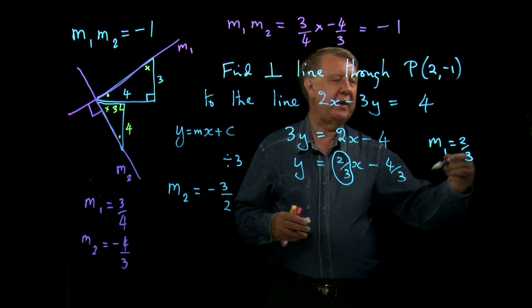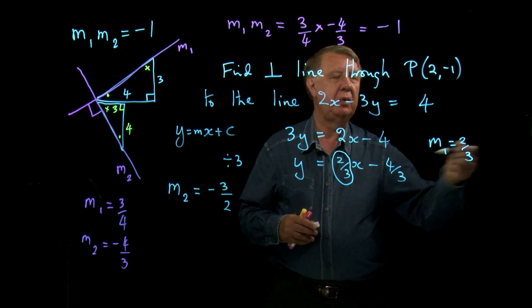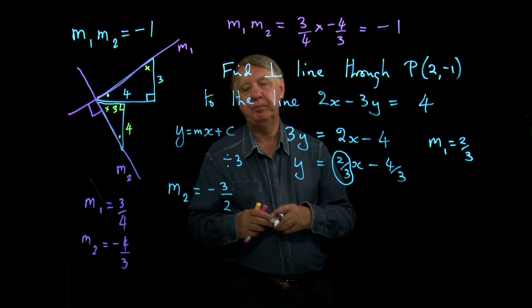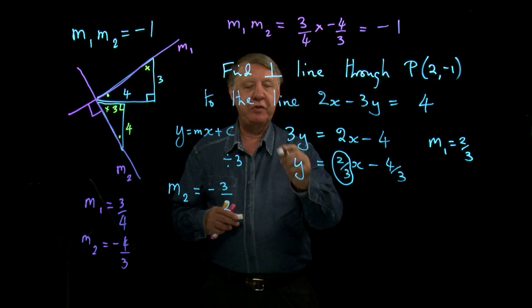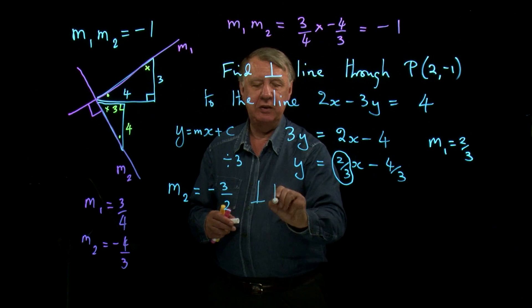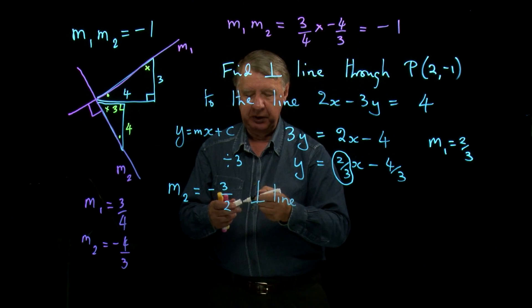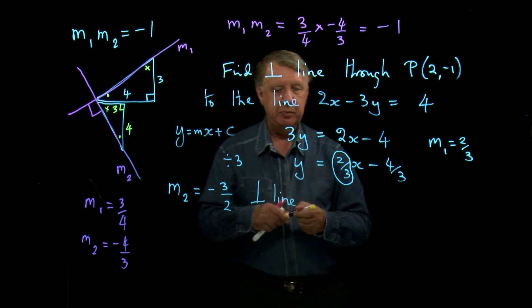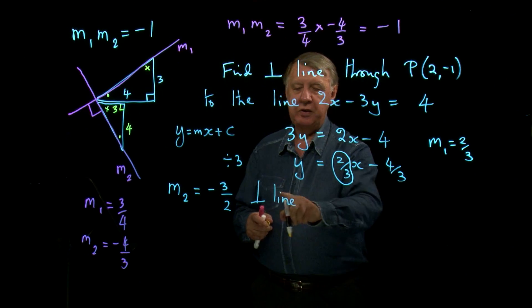Okay, remember the quick way to do that is you invert the fraction and you change its sign. So my perpendicular line will be—let's use a different colour just to make it clear on the board—so my perpendicular line is y equals negative 3 over 2x plus c.